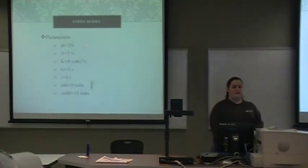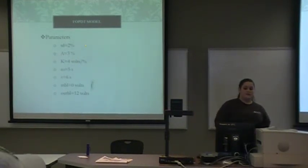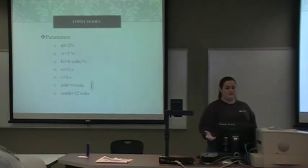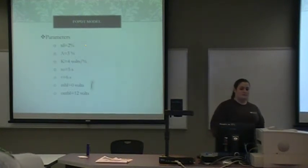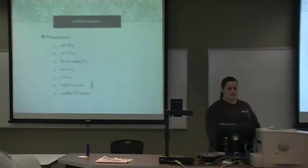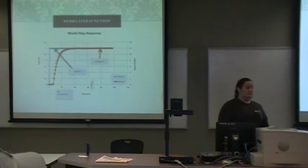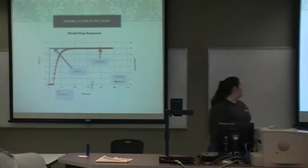In the FOPDT model, these are the parameters I used for an example: TD was 2%, A was 3%, and K was 4% per volt. The time was 5 seconds, tau was 6 seconds, the input was 0 volts, and the output was 0 volts. This is the resulting plot showing the input, output, and step curve.